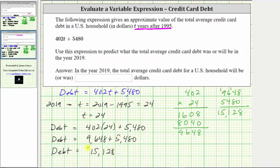And the units are dollars. So going back up to the question, in the year 2019 the total average credit card debt for a U.S. household will be 15,128 dollars. I hope you found this helpful.